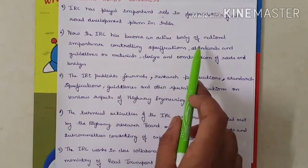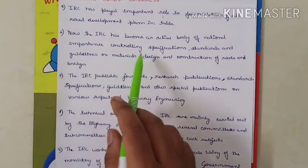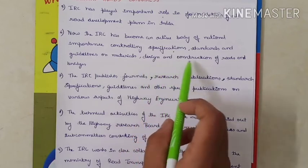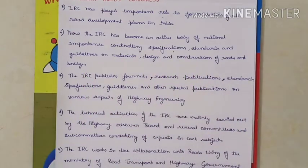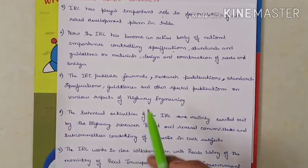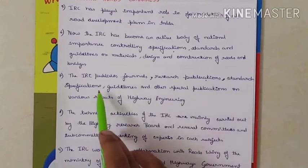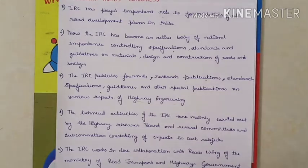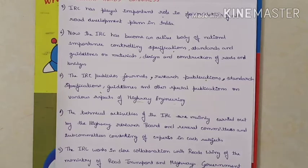IRC has become an active body of national importance in controlling specifications, standards, and guidelines on materials, design, and construction of roads and bridges. It has a specific IRC code book with guidelines for design, material, and construction. IRC publishes journals, research publications, specifications, and guidelines in various aspects of highway engineering, and works in collaboration with the Road Wings of the Ministry of Surface Transportation, Government of India.